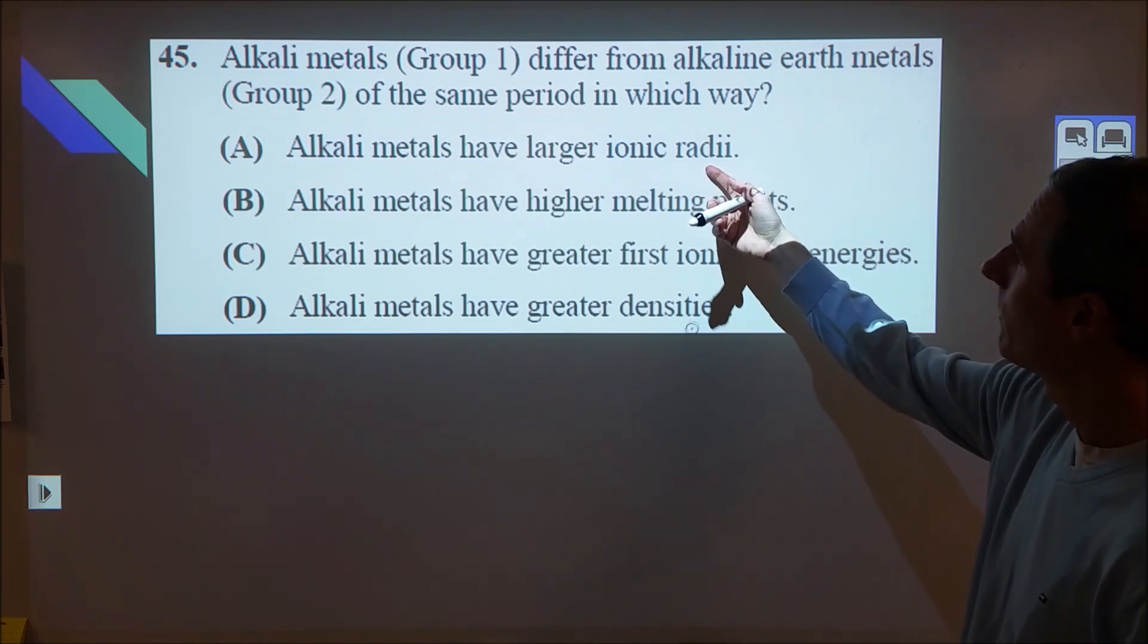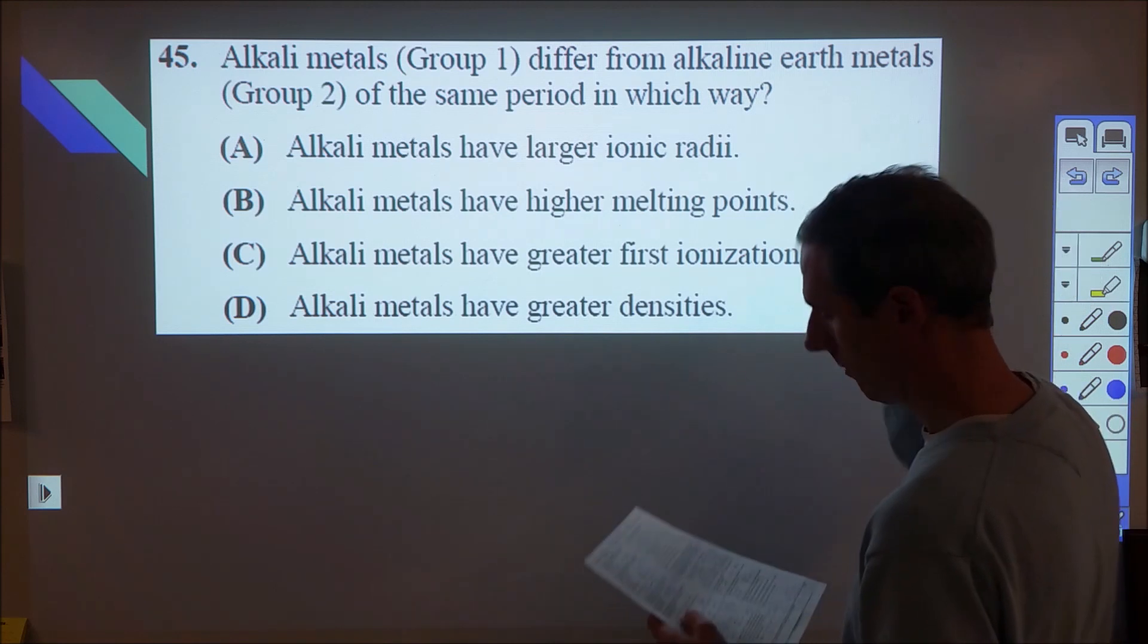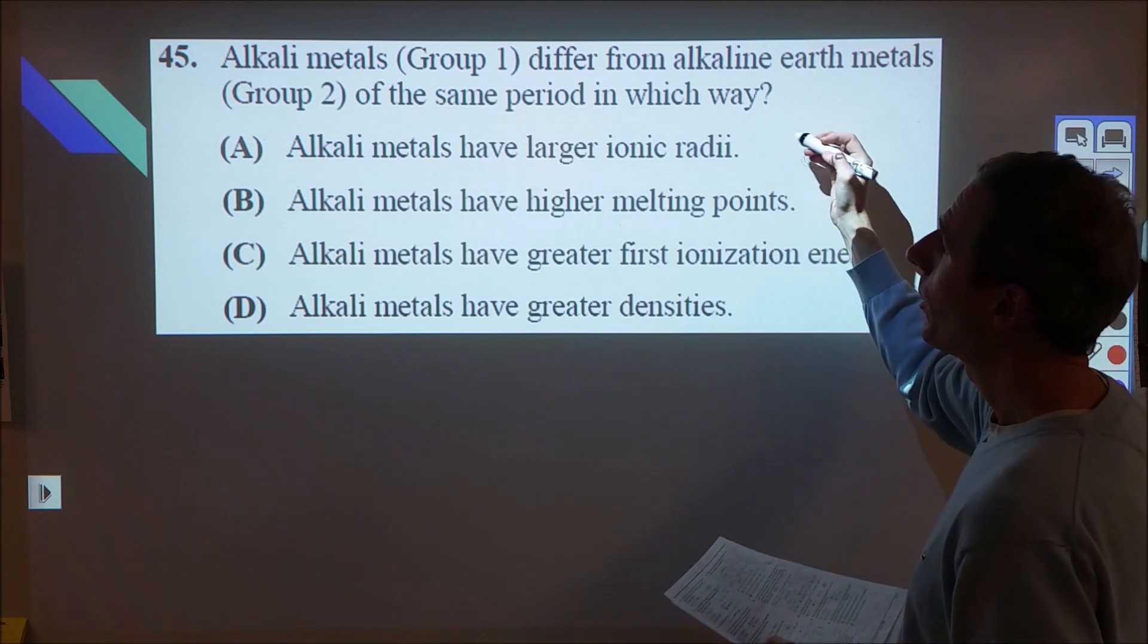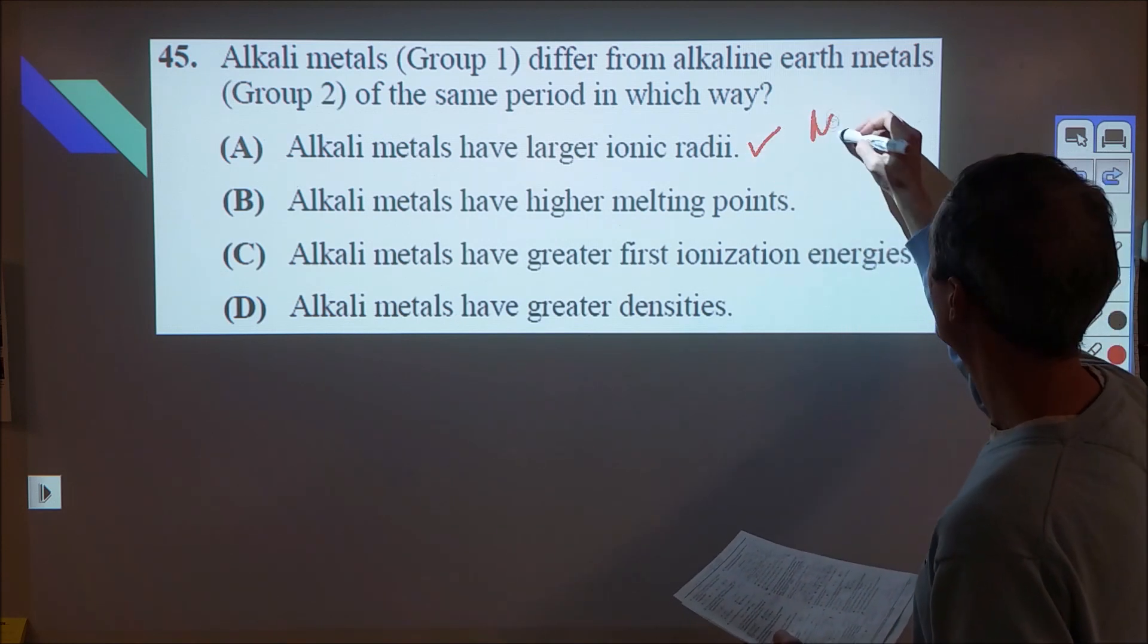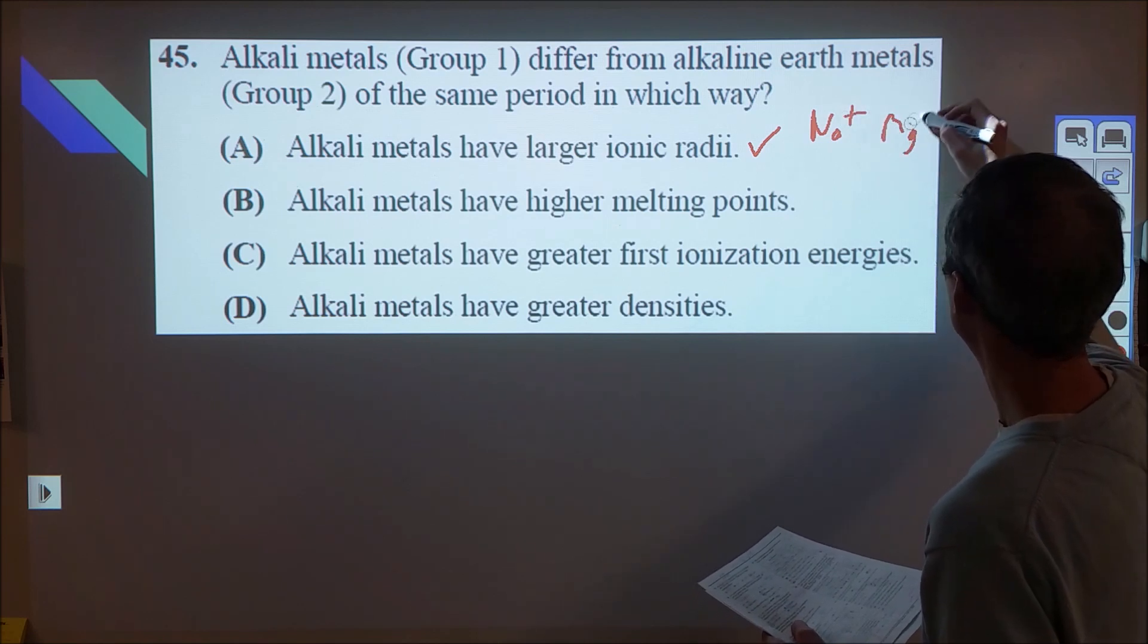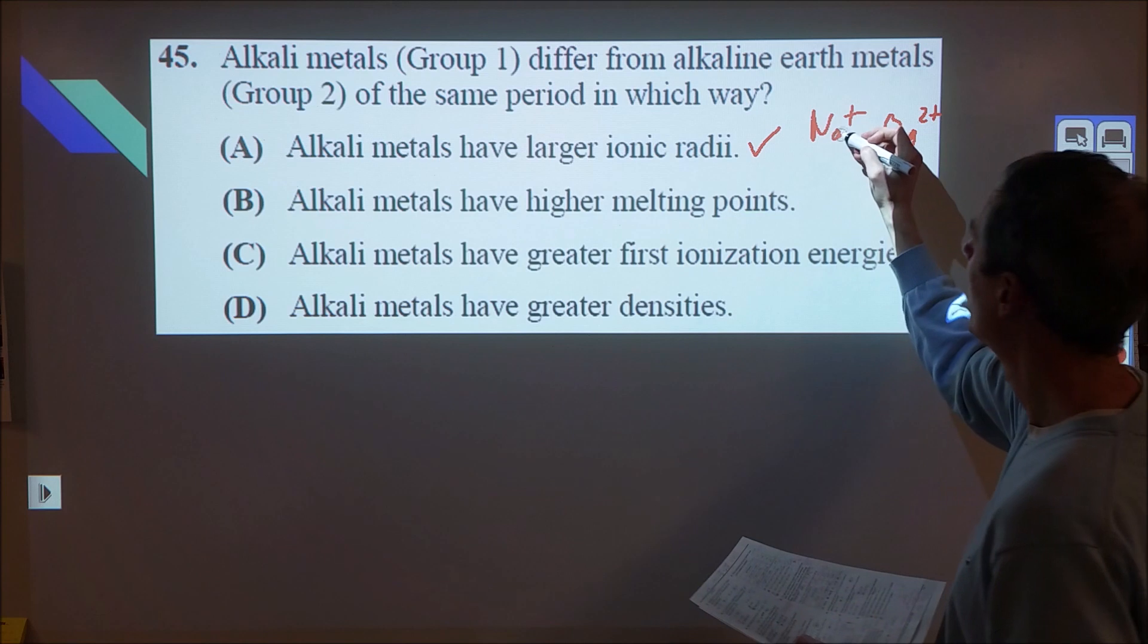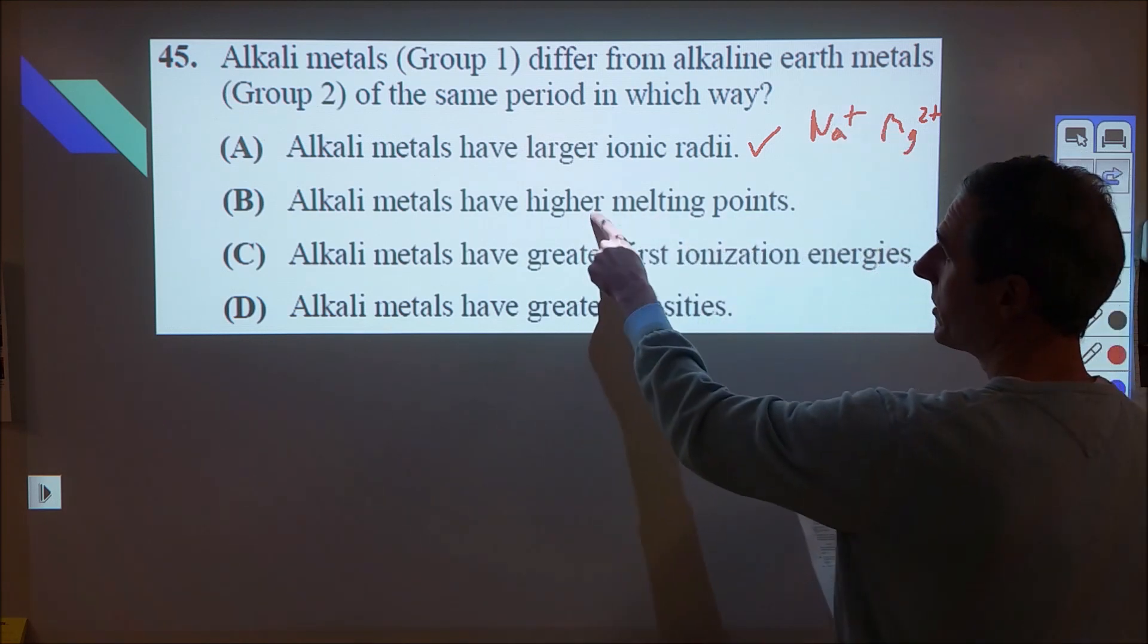45, the alkali metals having the larger ionic radii is true. So if we're looking at Na+ versus Mg2+, these are isoelectronic, and this has more protons, so this would be bigger. But just to go through and make sure that we're okay on everything else, the alkali metals have very, very low melting points.